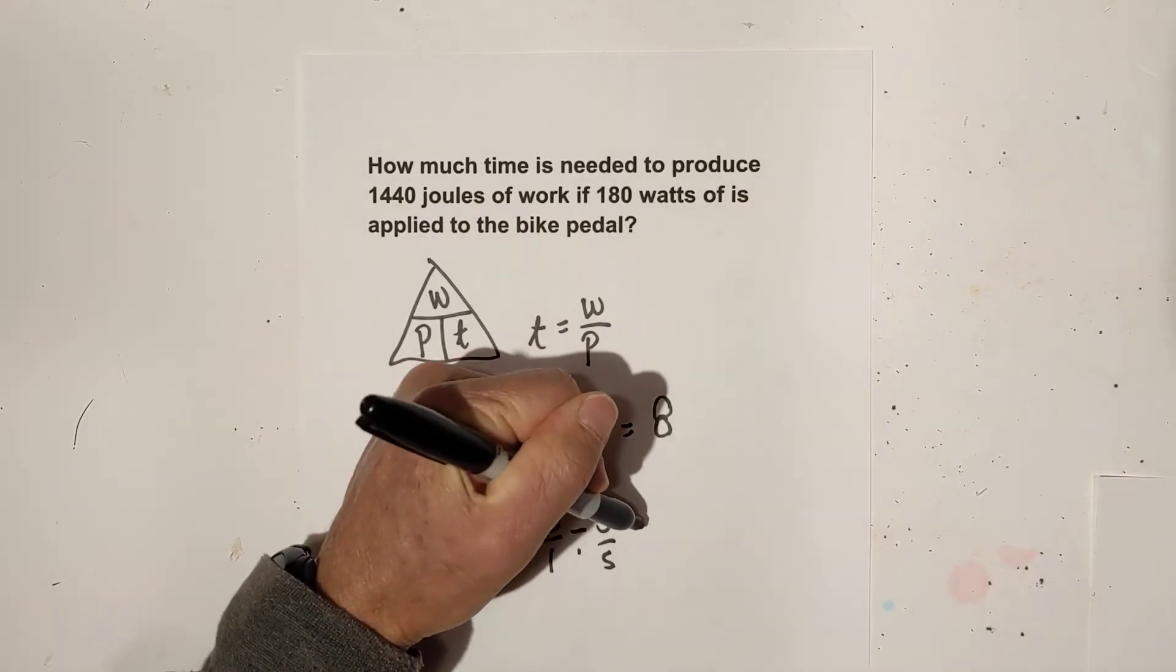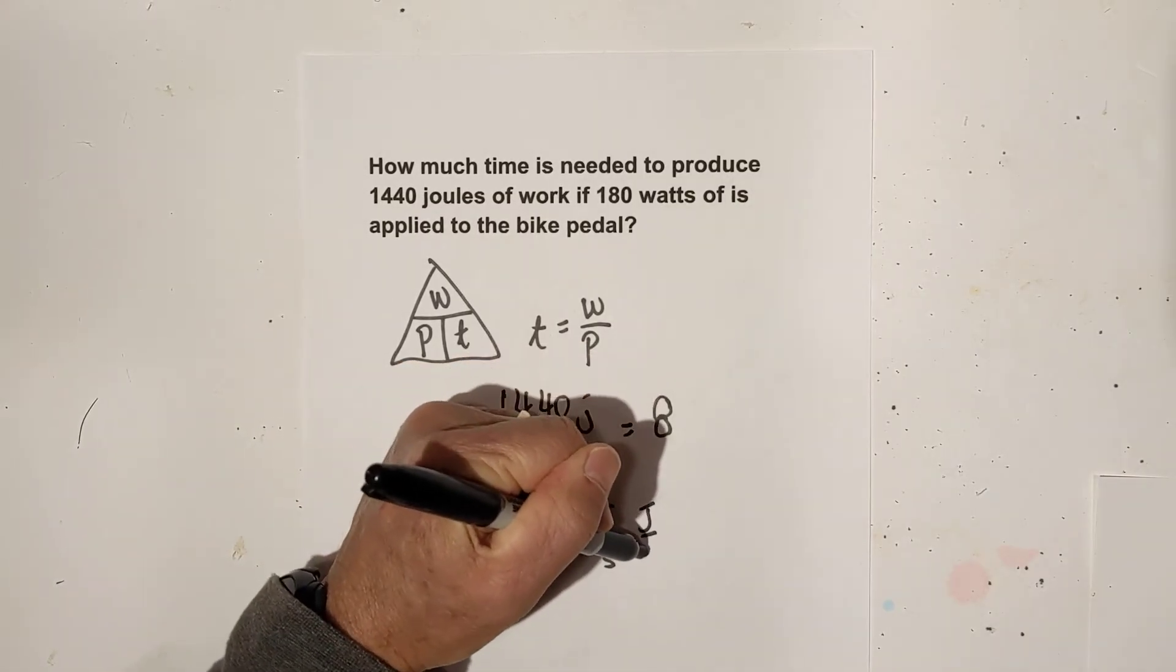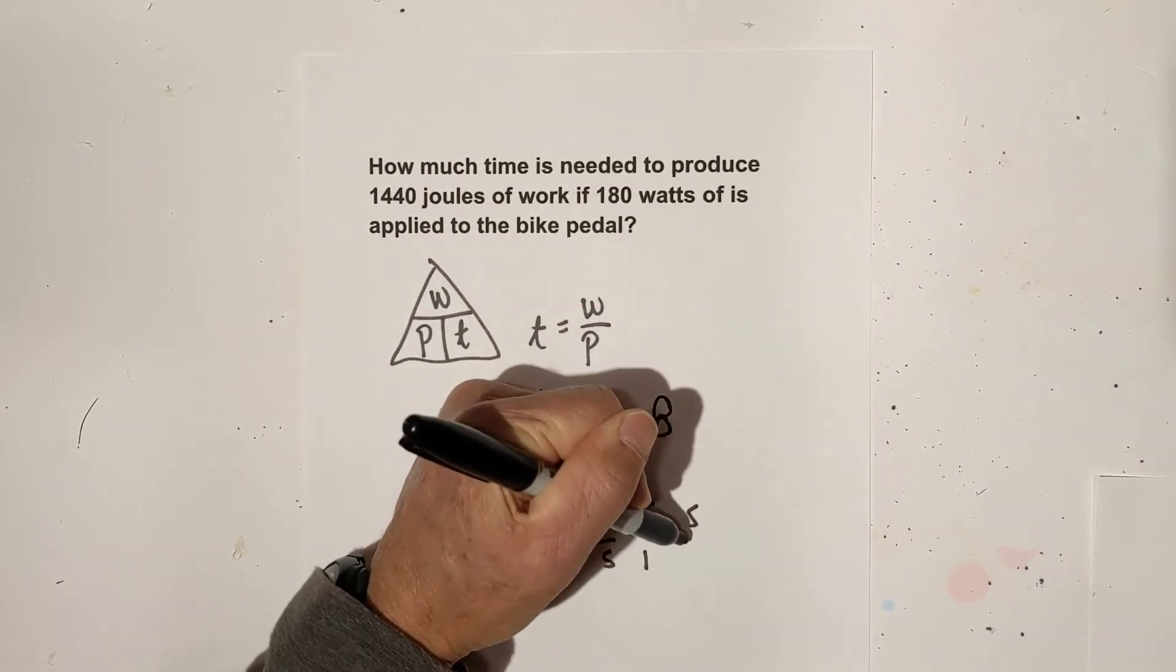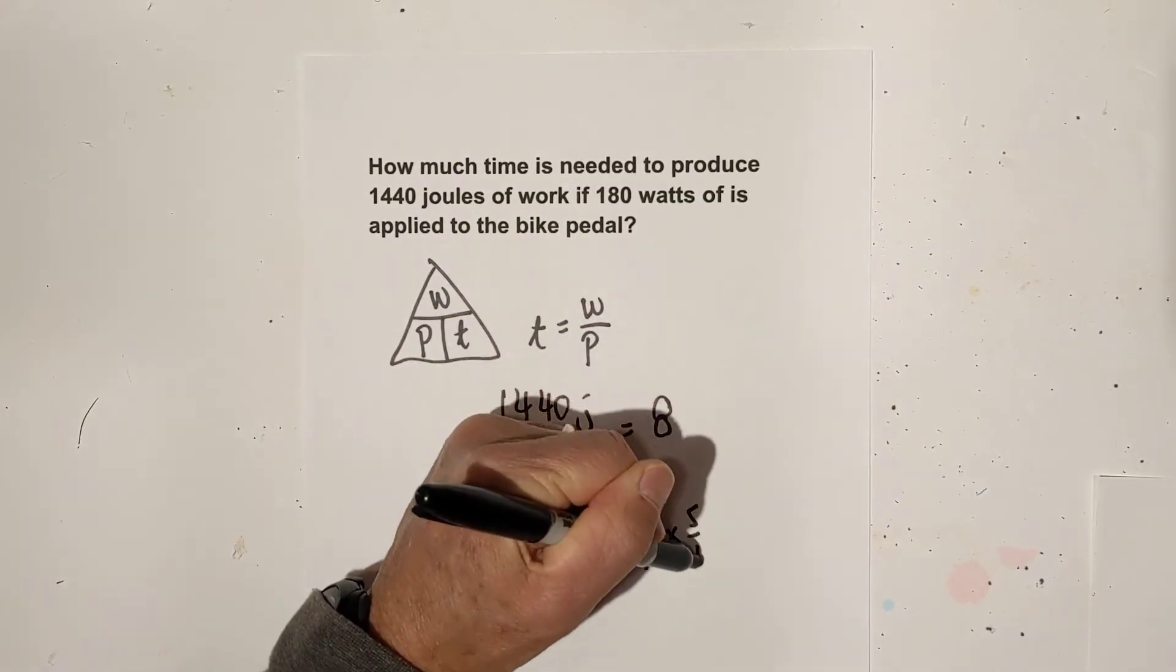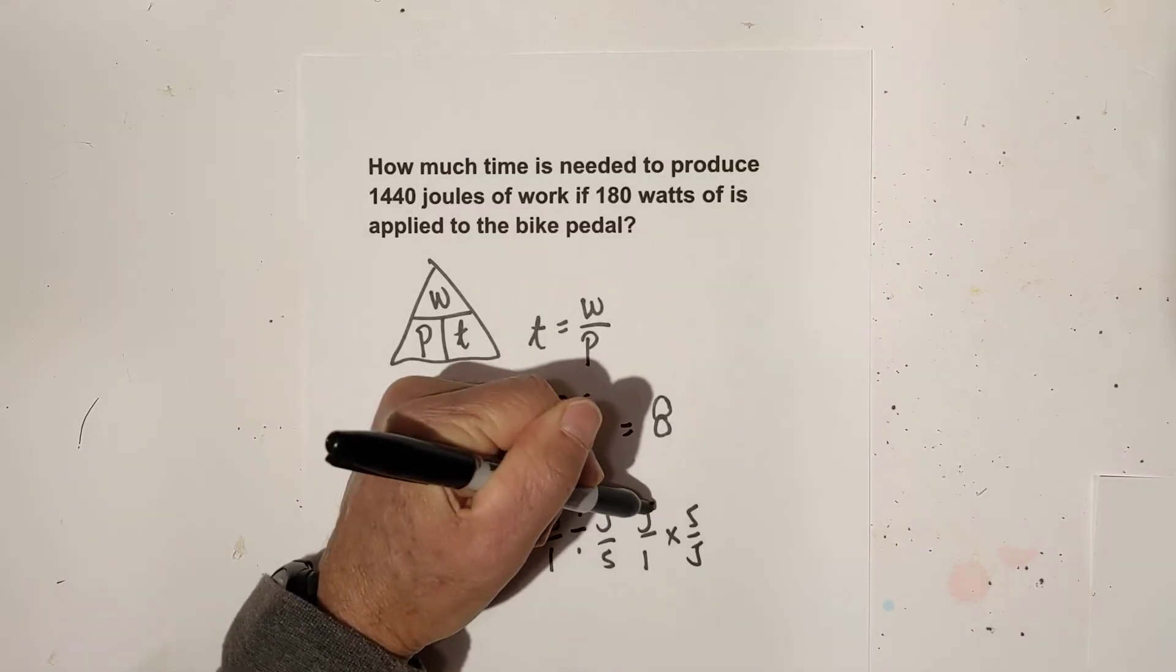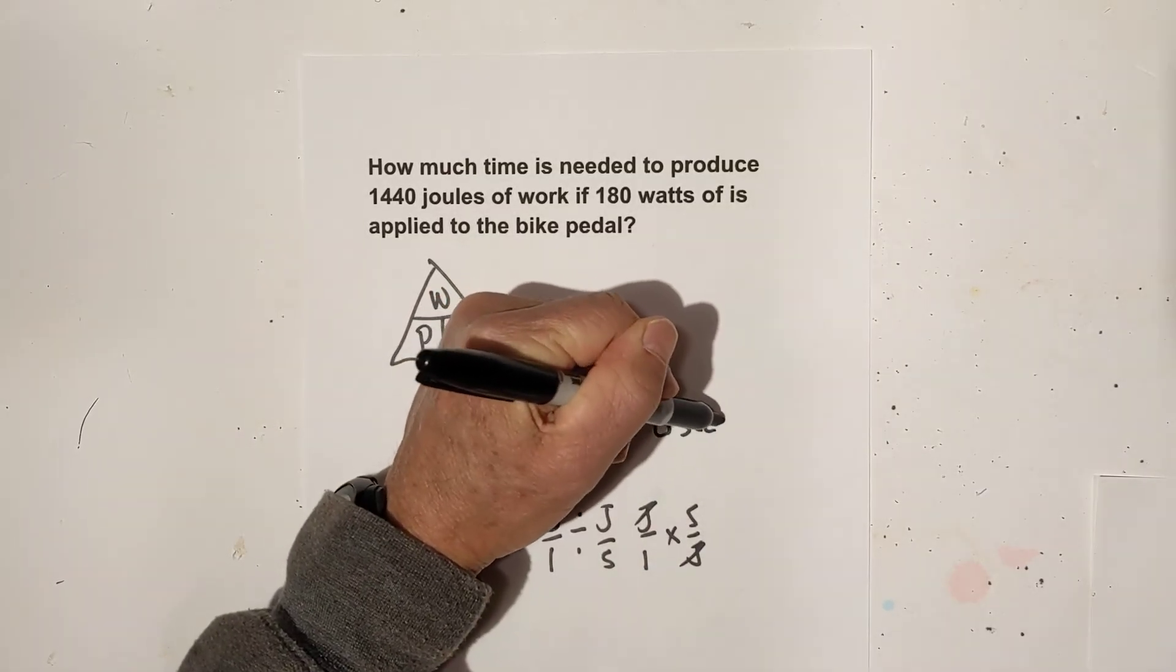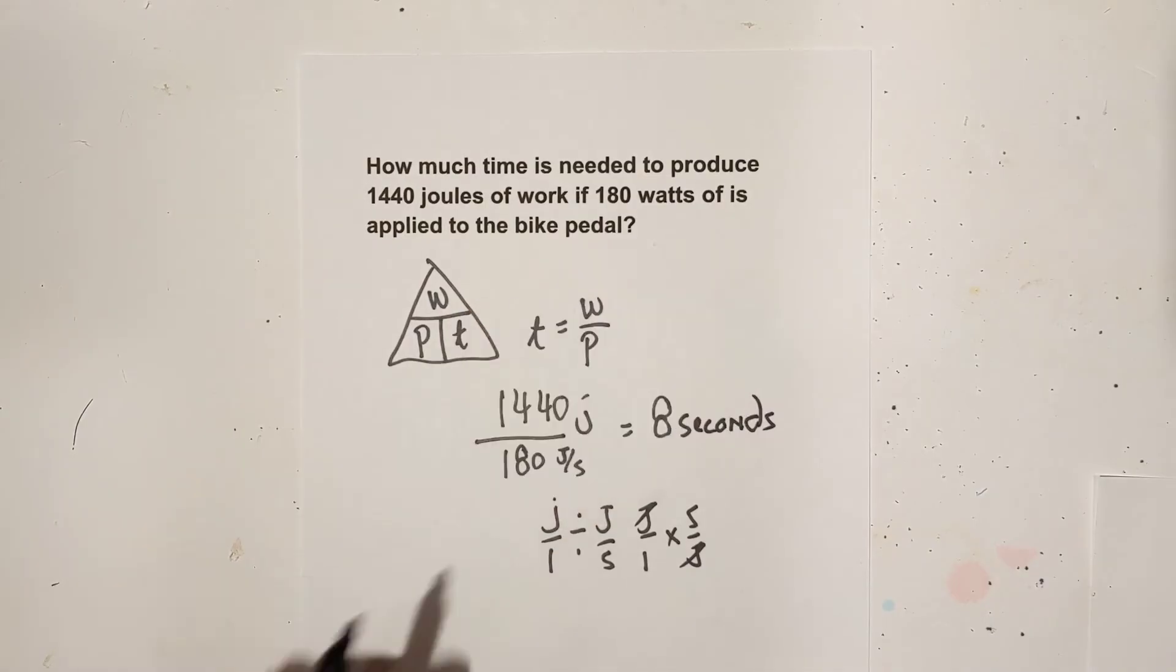We have joules and I'm going to write the joules over 1 divided by joules over seconds. When we divide, we're going to keep, change, flip. And so now what happens is the joules cancel and we're left with seconds. I just wanted you to be aware of the units of measure and what is taking place there. Let's look at our final example.